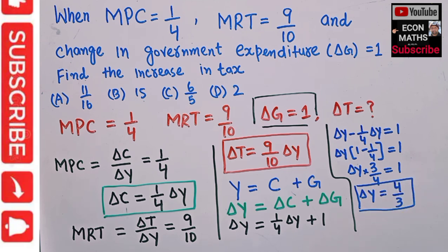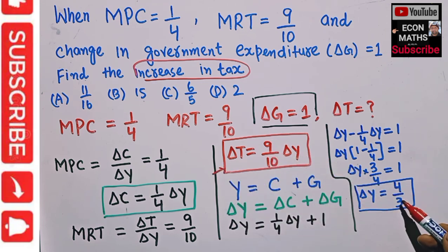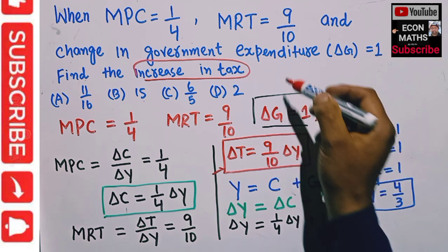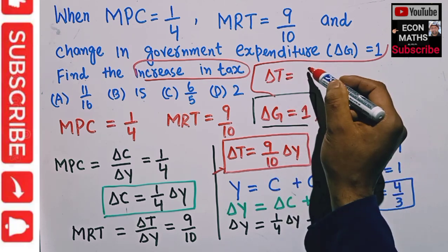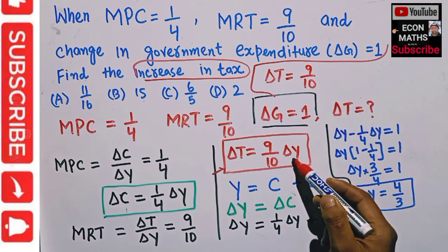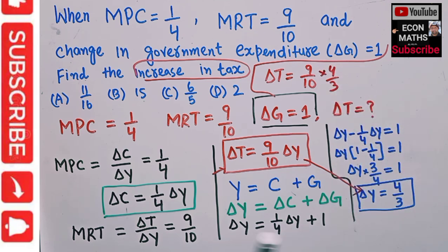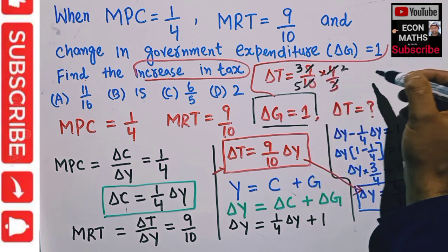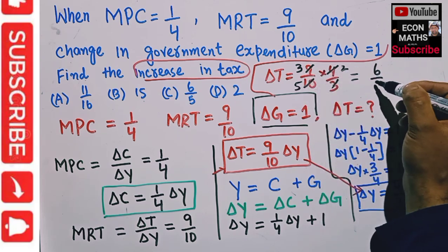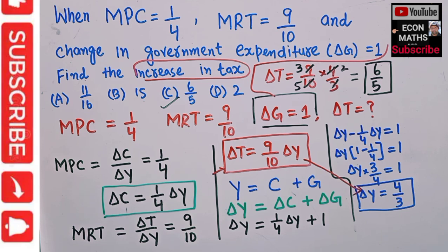We found ΔY = 4/3, but we need the change in tax. We have ΔT = (9/10) × ΔY = (9/10) × (4/3). Simplifying: 9 × 4 = 36 and 10 × 3 = 30, which gives 36/30 = 6/5. So the change in tax equals 6/5. The correct option should be option C. I hope I made myself clear in this video, thank you.